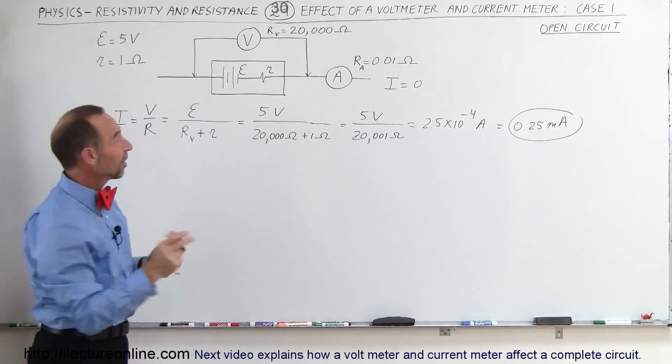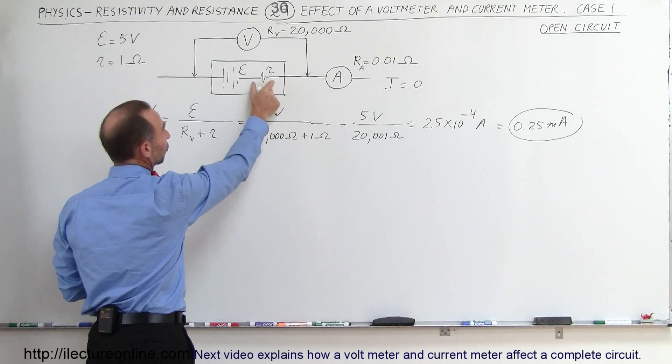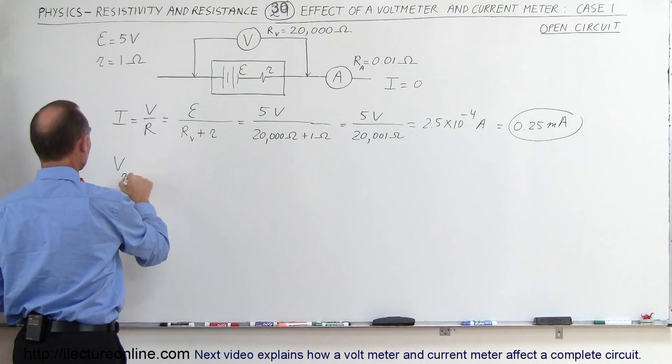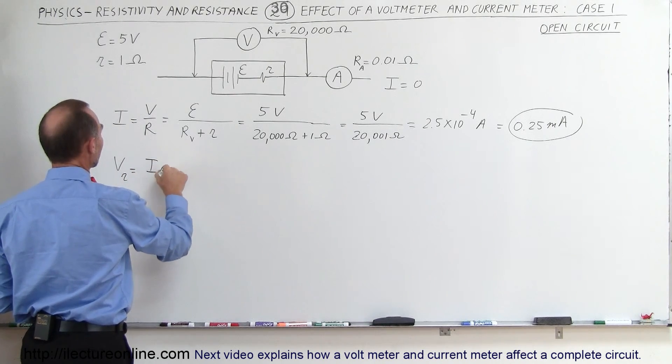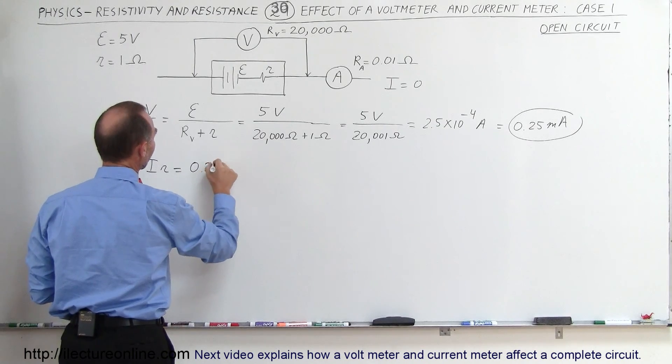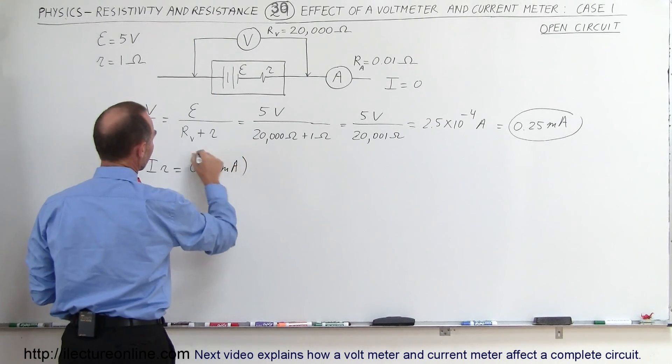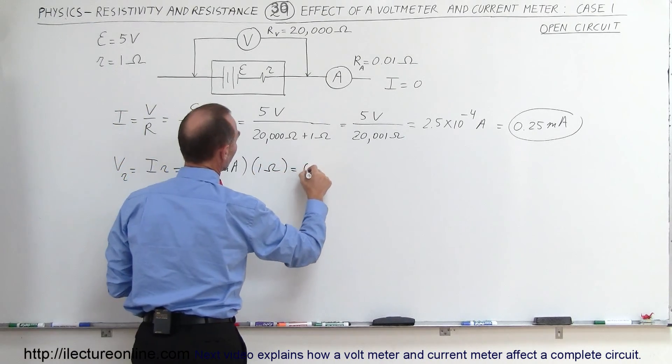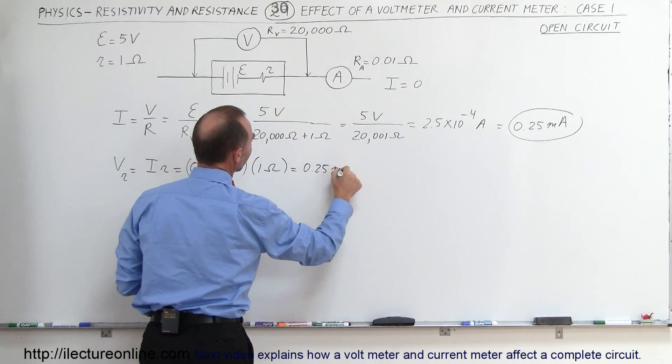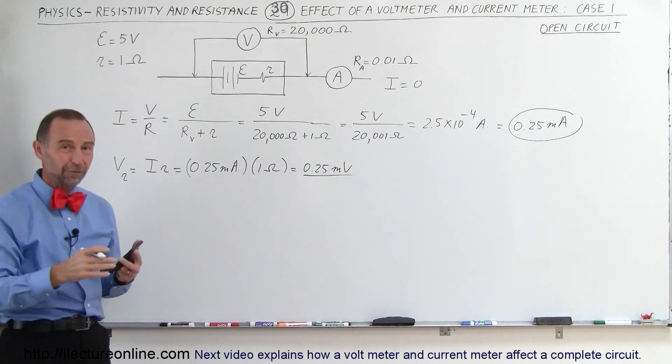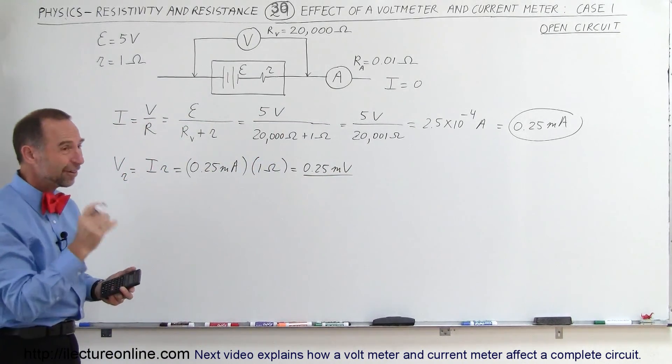So that means there's going to be some potential difference or voltage drop across internal resistance. The voltage drop across internal resistance equals I times internal resistance. In this case, that would be 0.25 milliamps times internal resistance of 1 ohm, which equals 0.25 millivolts. So less than a thousandth of a volt, a quarter of a thousandth of a volt, a very tiny difference.